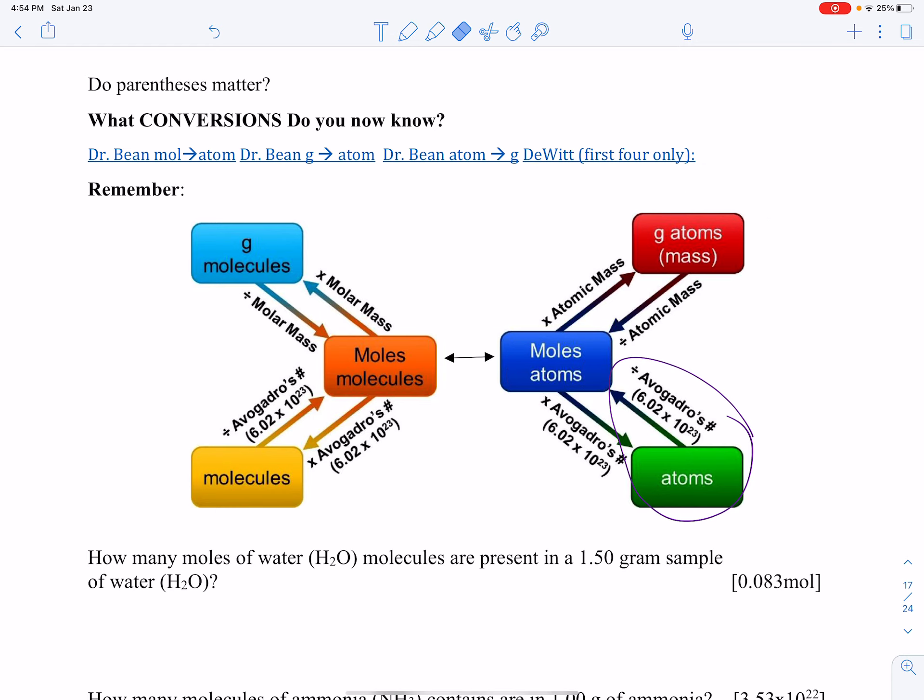We also talked about how you can go from moles of atoms to moles of molecules. That was like where we had C6H12, that would be a molecule, and then we said in it we had like six carbon moles or 12 hydrogens. So that's what we did before.